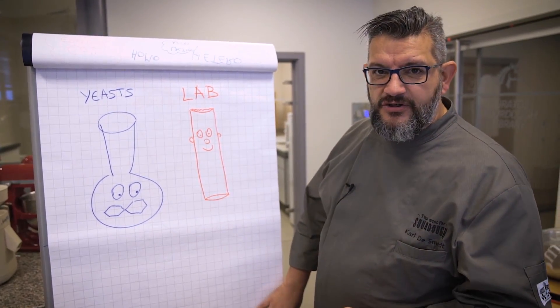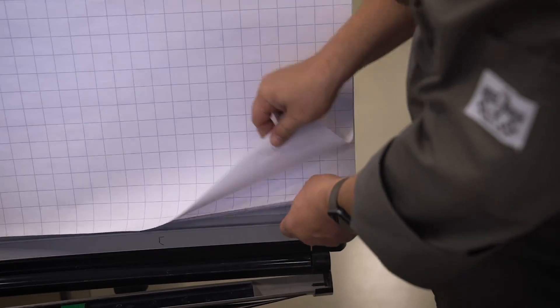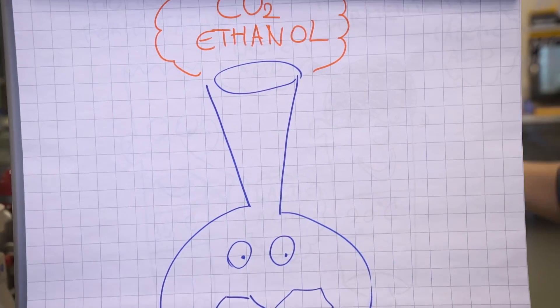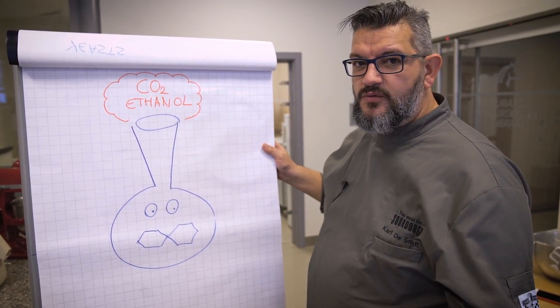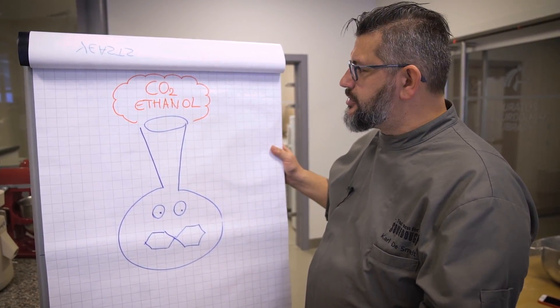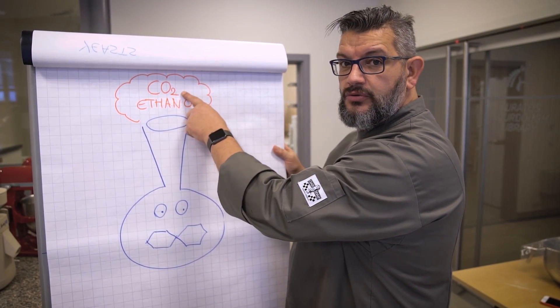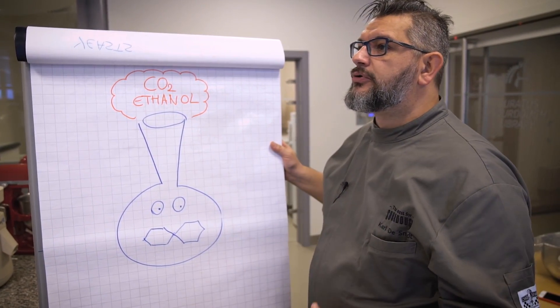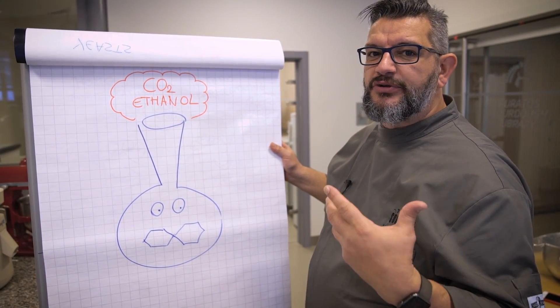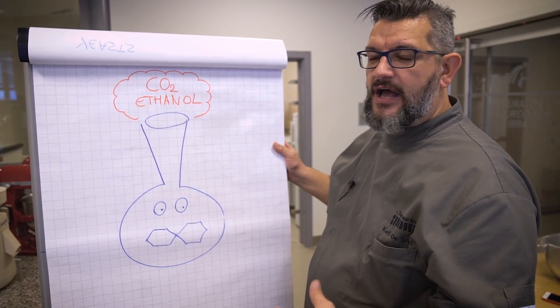Now, what is their function in the sourdough? First of all, the yeast will turn the sugars that are present in the starch into CO2 and ethanol, so the yeast will be responsible for the fermentation power of our sourdough.